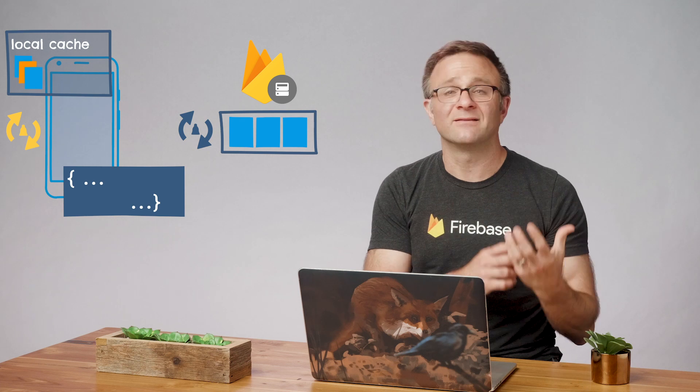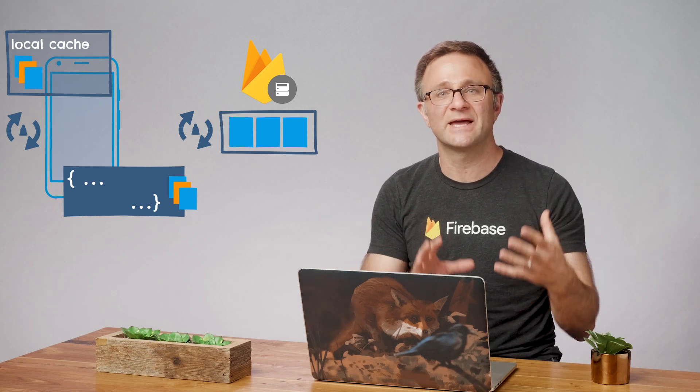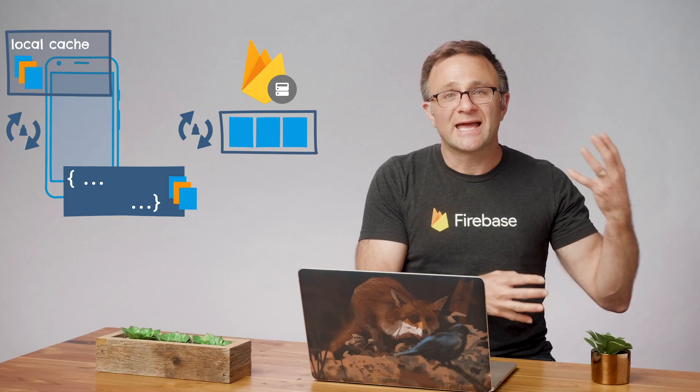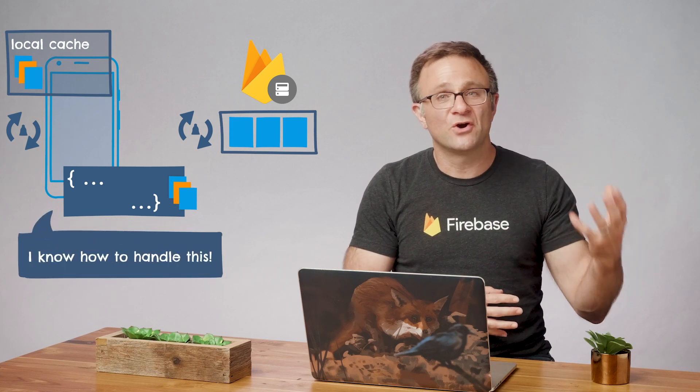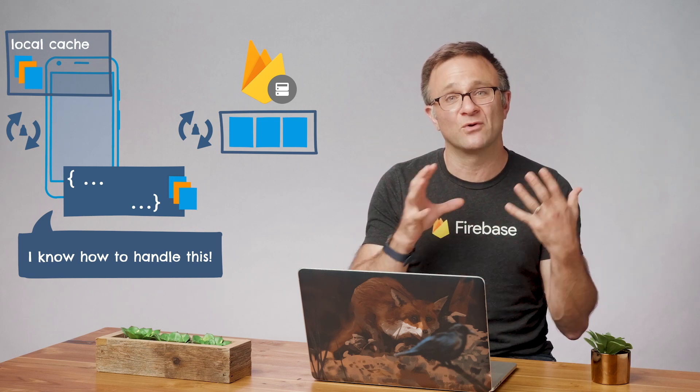Over on the client, the Cloud Firestore library will combine the updated document with the rest of the cached data, and the listener will still present you with the entire set of 20 documents. That might seem weird at first — why send all the documents again? But this is usually what you want as a developer. The code in your listener is already set up to read in and display a full set of 20 documents, because that's what happens the first time it's run. So when you get back a full set for all future changes, you can reuse that code without special-casing it.